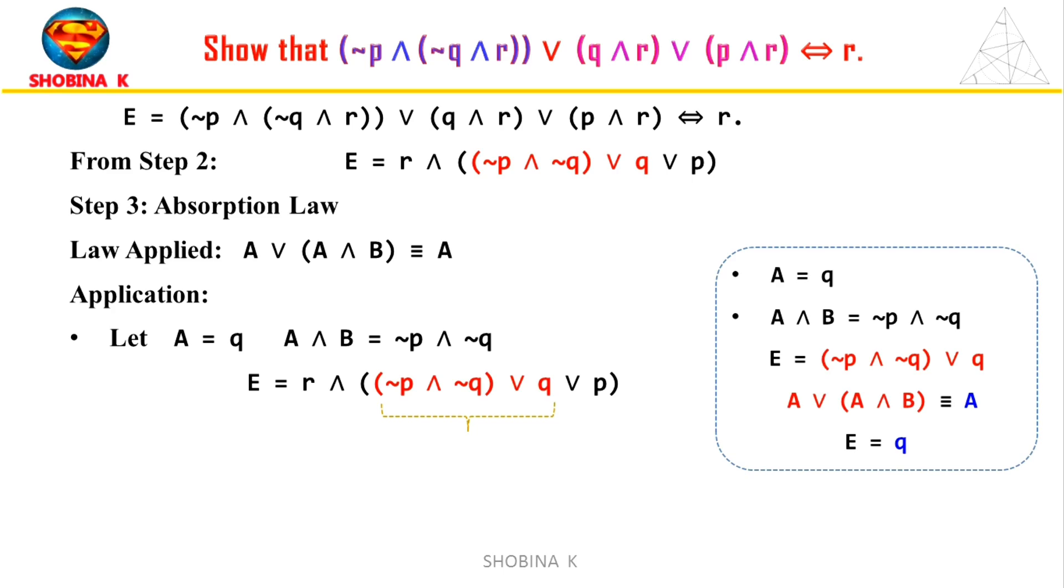Now, look at the expression. This expression is from step 2. Here, let A be Q, and A and B be not P and not Q. On applying the property, we rewrite the expression as R and (Q or P). In this step, we replace the part (not P and not Q) or Q with just Q.